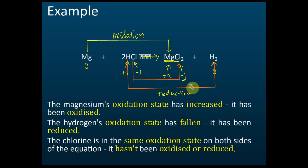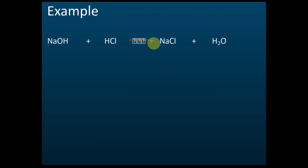I advise students to use the oxidation state method rather than the 'receive/lose oxygen,' 'receive/lose hydrogen,' or 'receive/lose electrons' methods. The first two apply only to certain reactions, and the electron transfer method is often very hard for students to visualize. The change in oxidation state is the best method to identify whether an element undergoes oxidation or reduction.